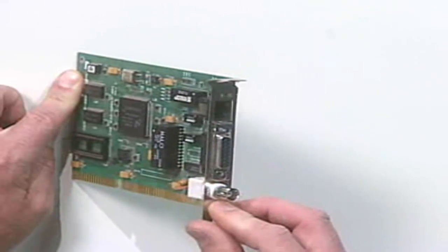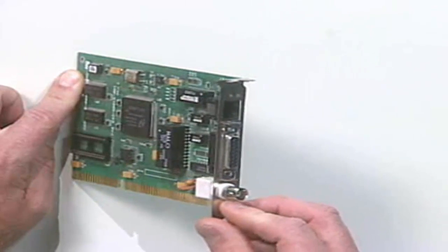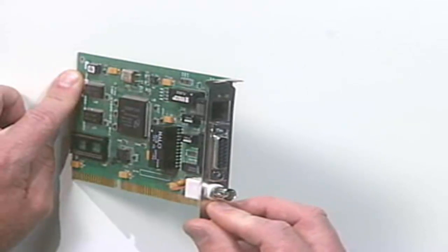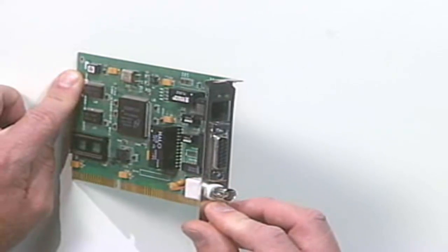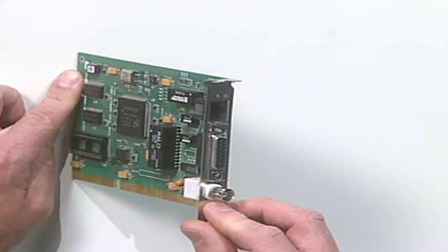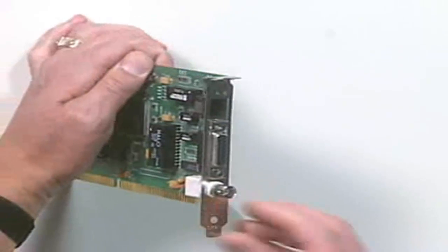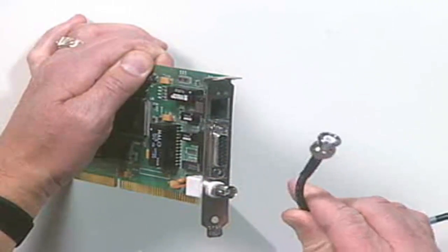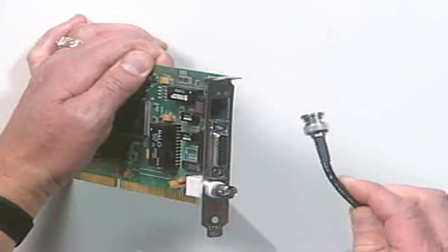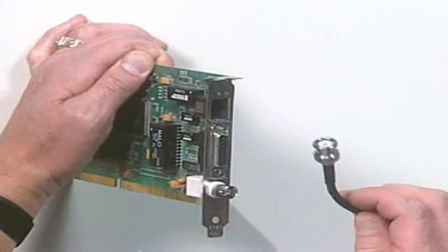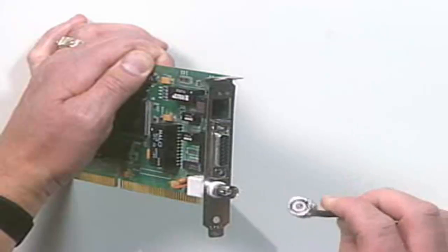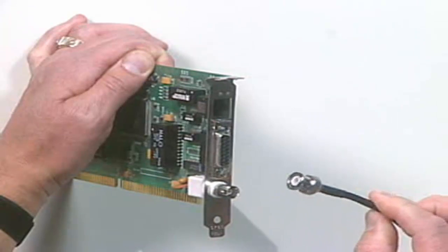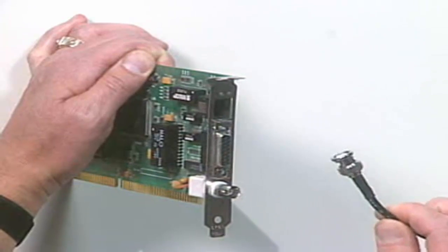This connector down here, which we use for a 10-base-2, is called a BNC connector. There's a lot of debate as to what BNC actually stands for. There's many different definitions. For the most part, folks agree that it stands for British Naval Connector. Now, the cable that you connect to a 10-base-2 network looks like this. It's RJ-58U coaxial cable. A lot of folks say, well, it looks like my cable TV cable. Similar, but it isn't the same. The electrical properties are different.